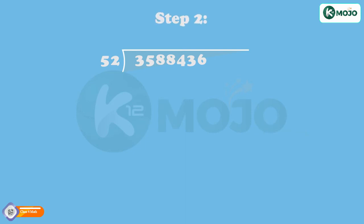Step 2: 52 goes 6 times, i.e., 52 into 6 is equal to 312. Write 6 as quotient and 312 below 358. Step 3: Subtract to get 358 minus 312 is equal to 46.